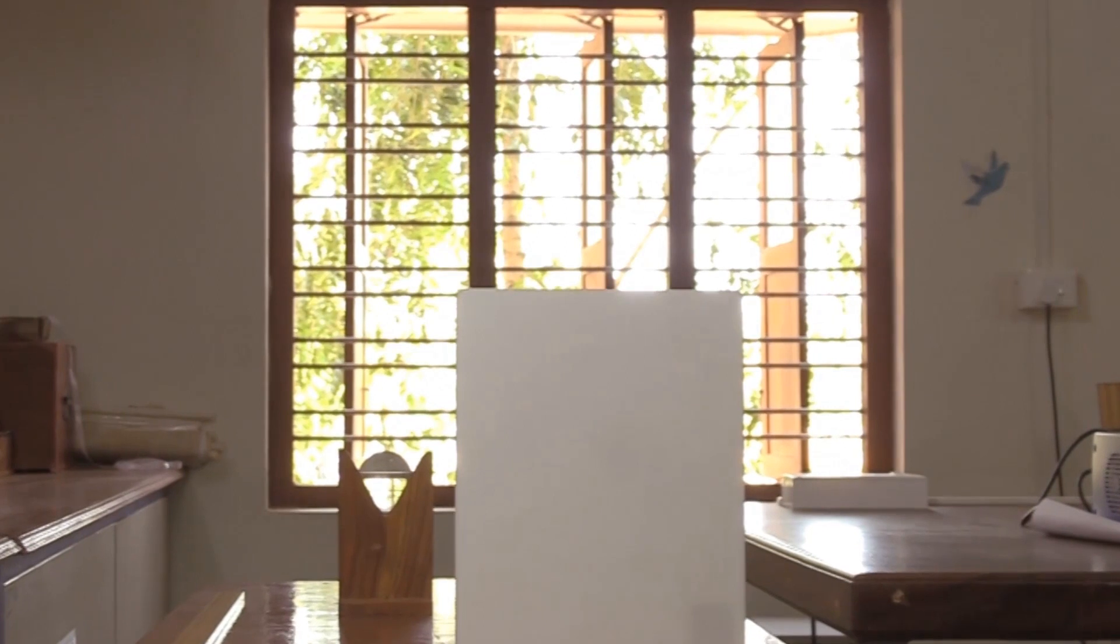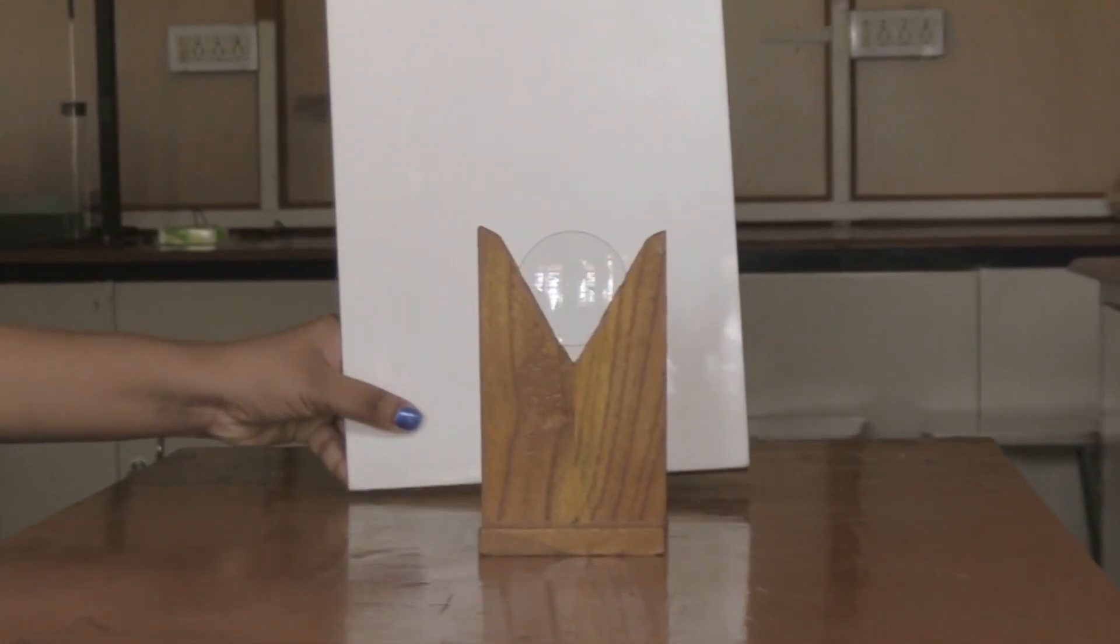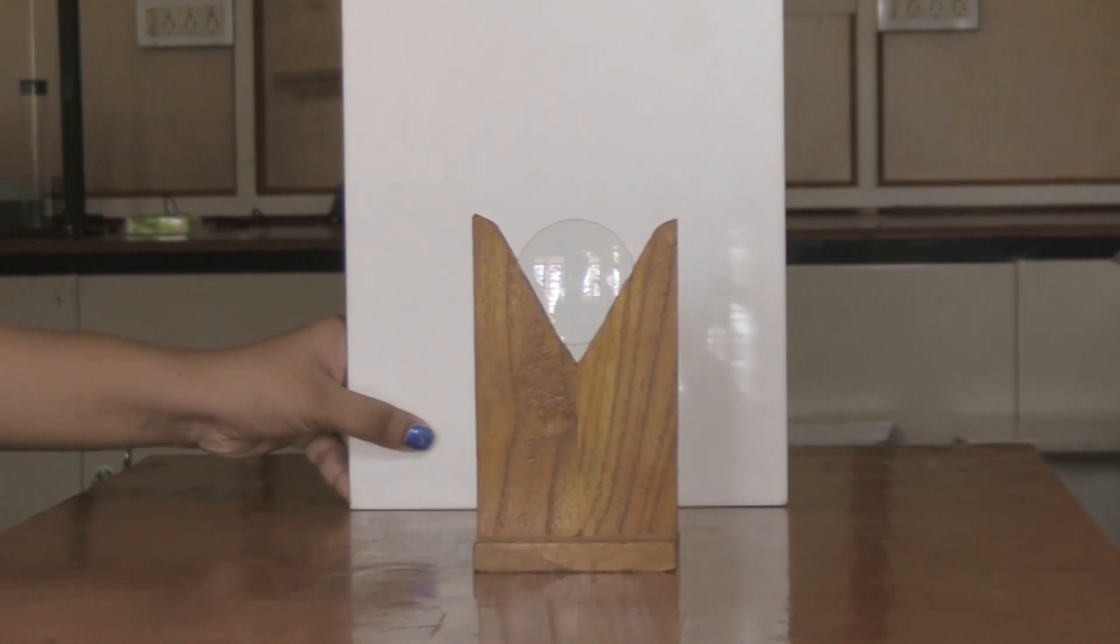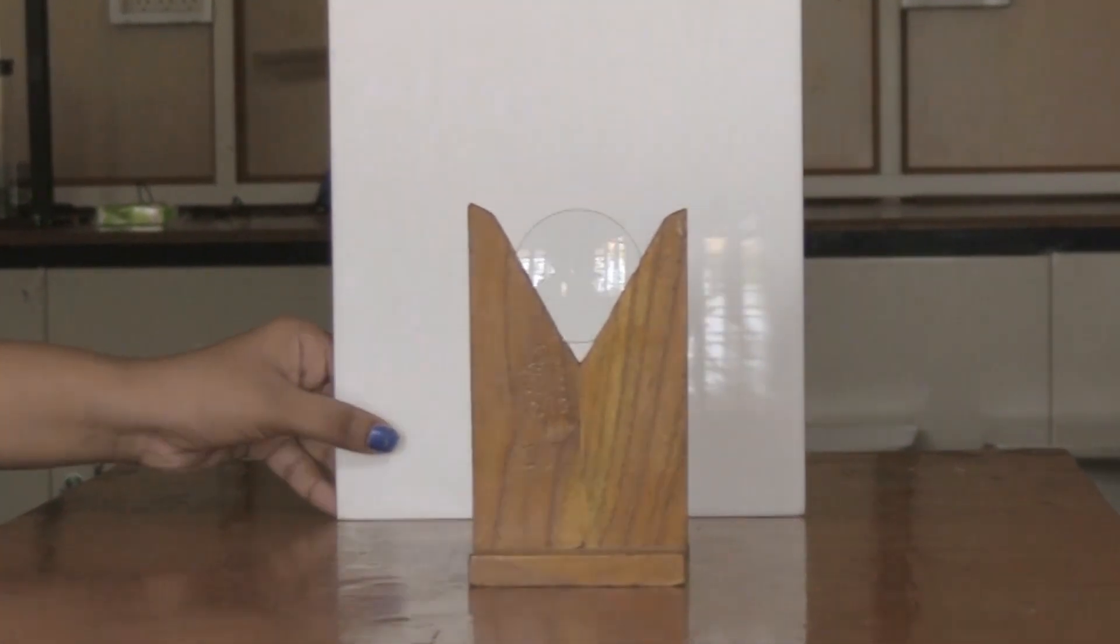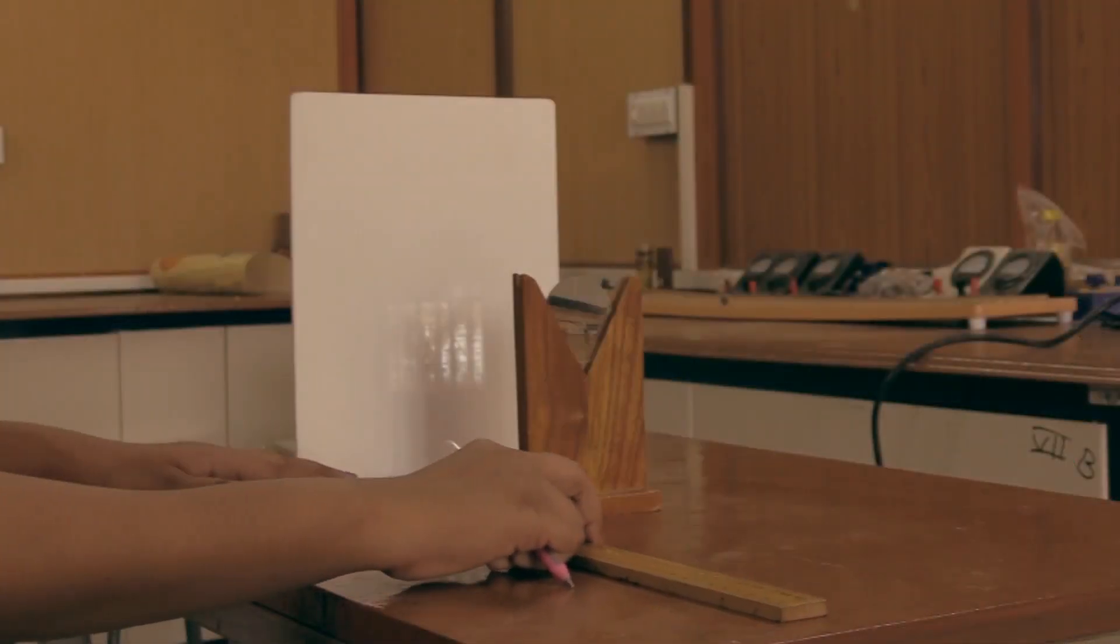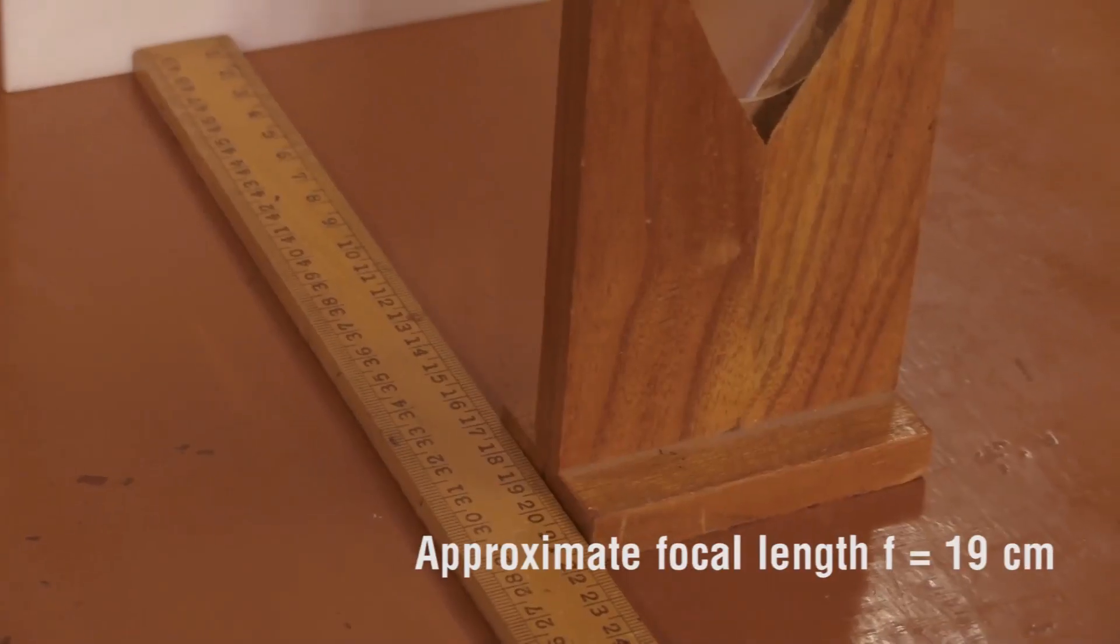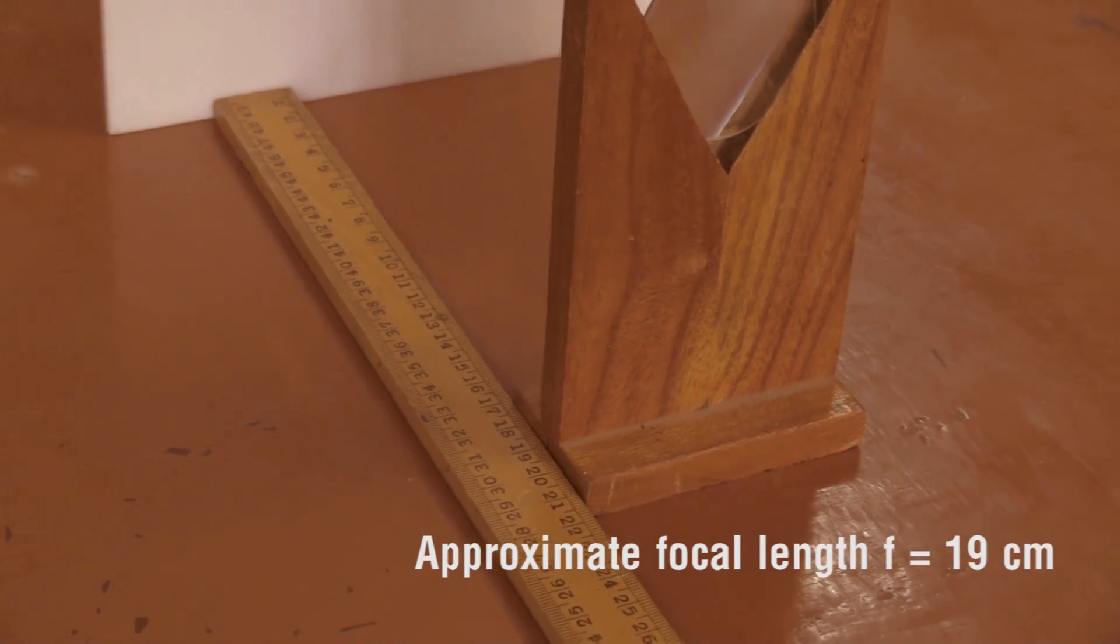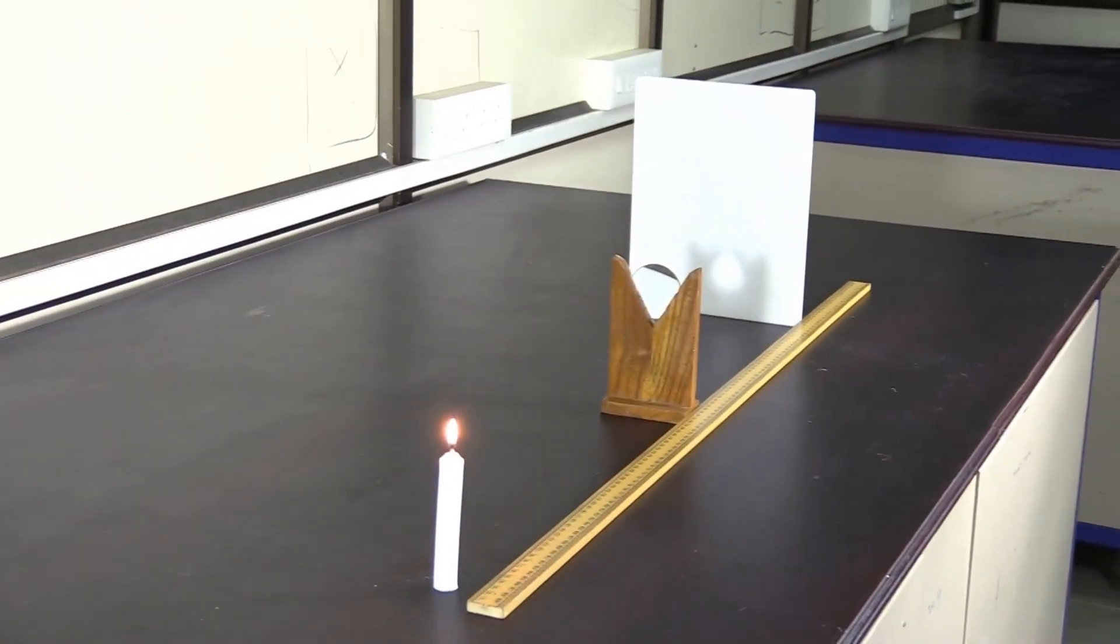Obtain an image of the object on a screen placed on the other side of the lens. Move the screen back and forth to obtain a sharp and clear image. Measure this distance between the screen and the lens as the approximate focal length of the lens, F.